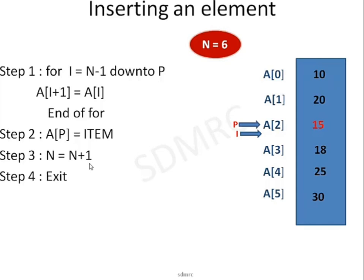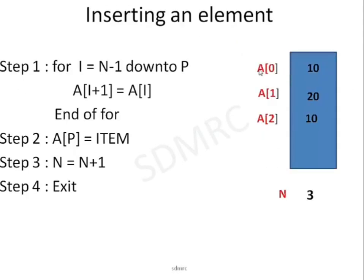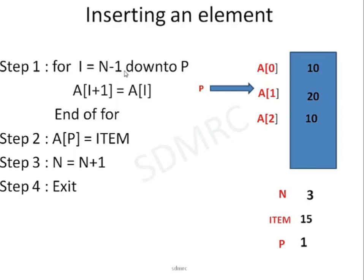Let me trace this algorithm with one set of values. There are 3 elements in the array. Whenever you insert an element, you need to know the value of item and the position you want to insert. Let me take item = 15, and I would like to insert at location number 1, so p = 1. Step number 1: for i = n-1. Now n minus 1 is 3 minus 1, which is 2. So i = 2.